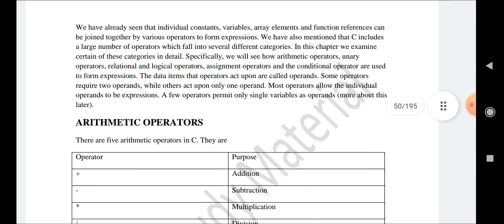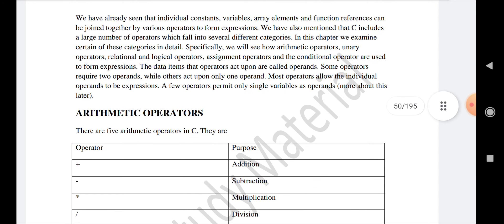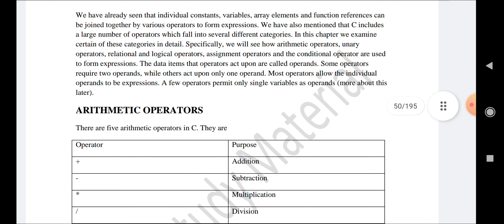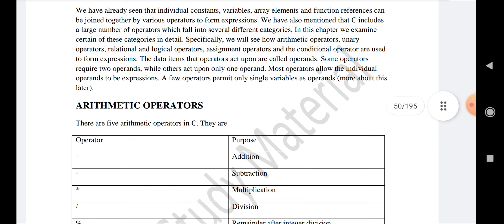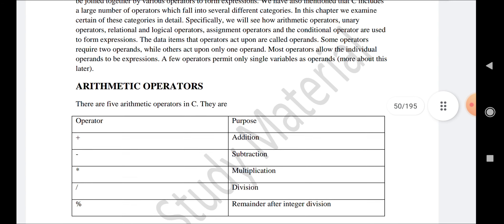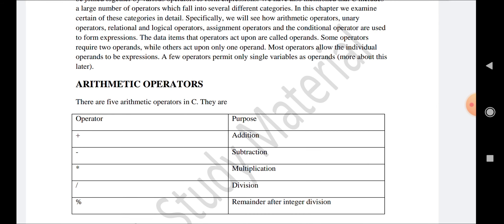We have already seen how individual constants, variables, array elements, and function references can be joined together by various operators to form expressions. C includes a large number of operators which fall into several different categories.